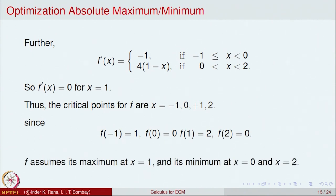This is how one analyzes absolute maximum and minimum. The strategy is: first ascertain the function will have an absolute max and min by checking the domain is a closed bounded interval and the function is continuous. Then find candidate points — endpoints, interior points of non-differentiability, and interior points where the derivative is zero — compare function values, and identify the largest and smallest.